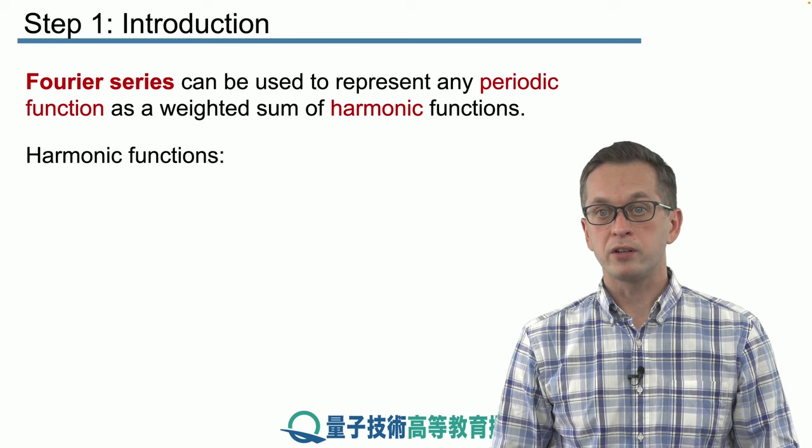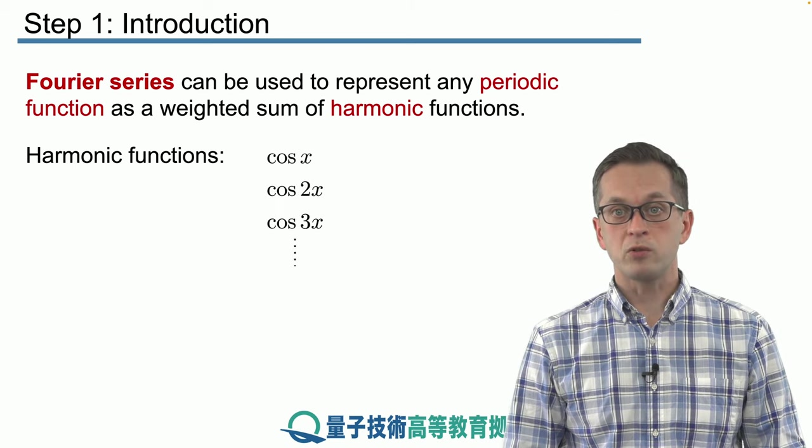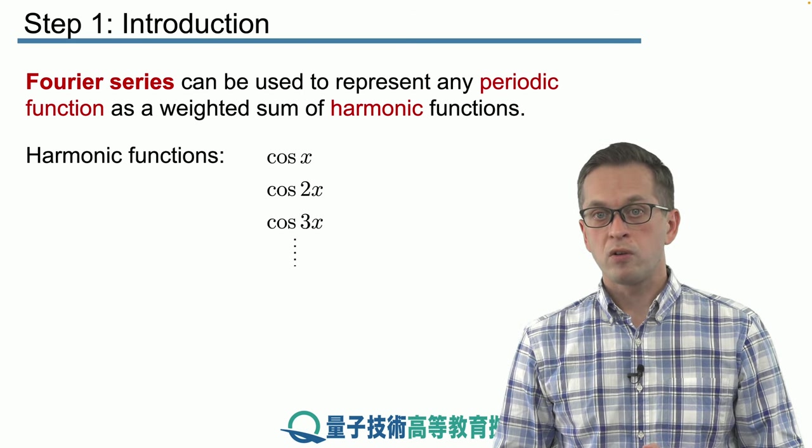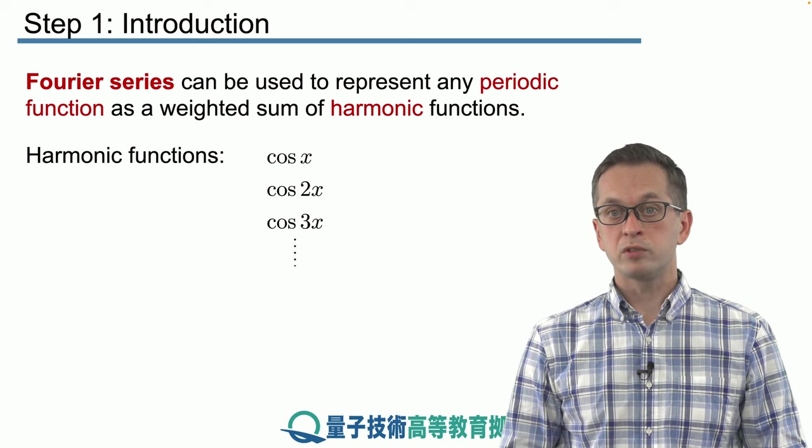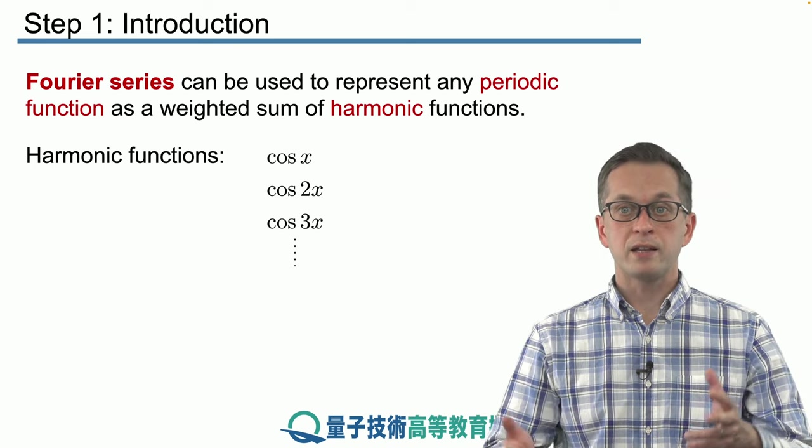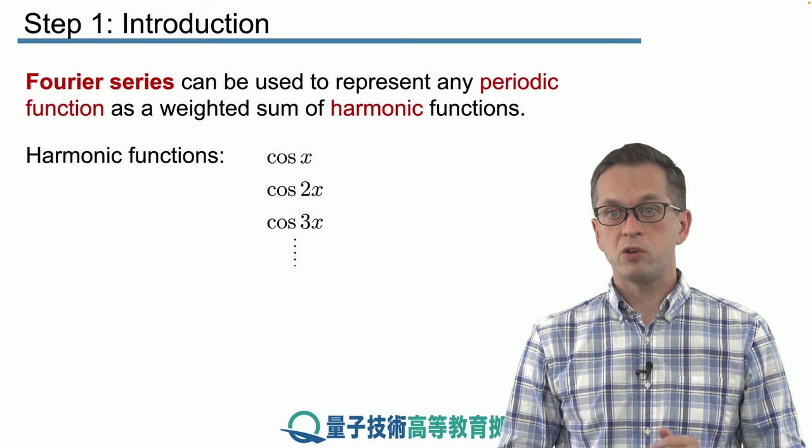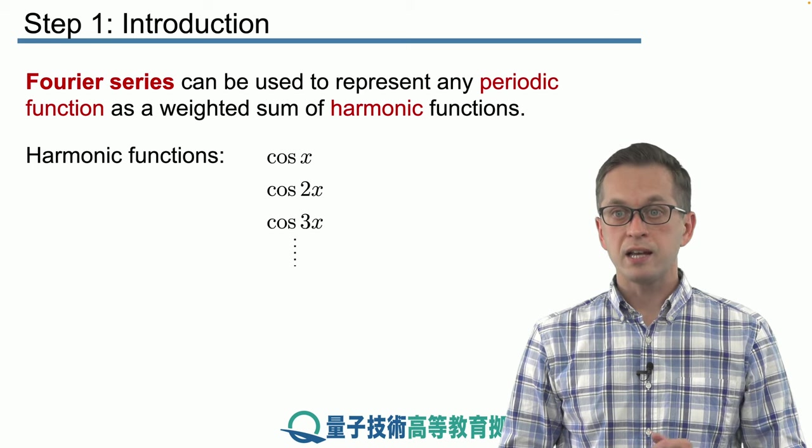Now, what do we mean by harmonic functions? By harmonic functions, we mean the following functions: cosine x, cosine 2x, cosine 3x. So we saw in our previous example that if we take the equal superposition of these waves, we get some nice resulting function. Can we use these functions, just the cosines, to represent any function, any periodic function?